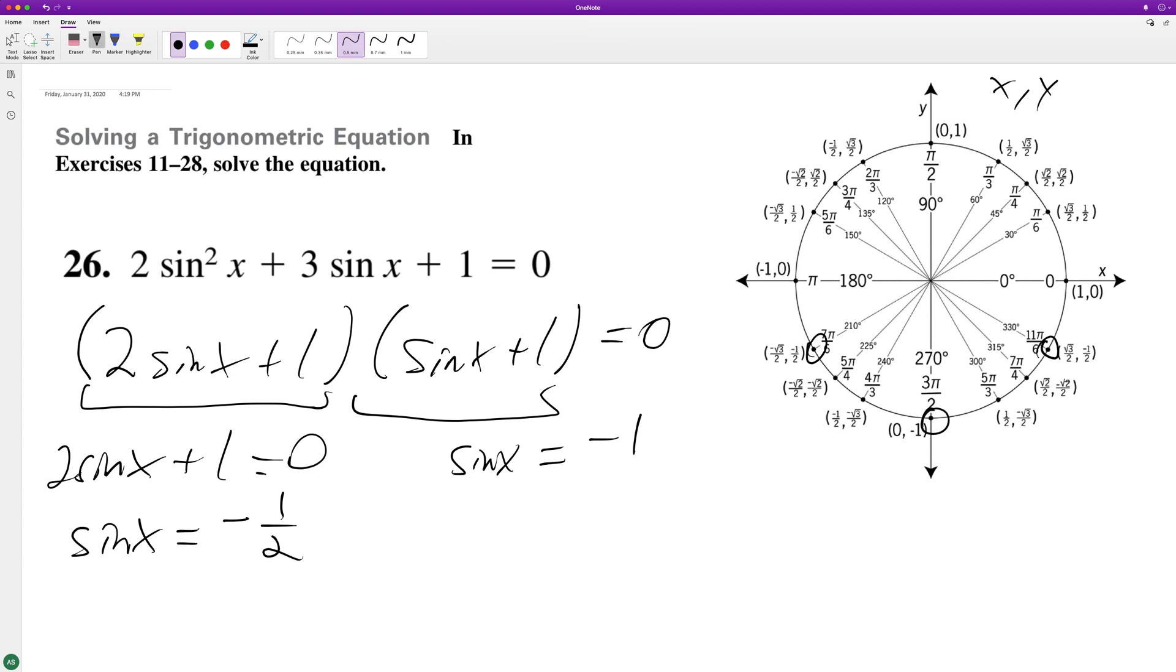So those are our solutions, but to get them equal to every instance coterminal angle, we're going to have 7 pi over 6 plus 2 pi n, 3 pi over 2 plus 2 pi n, and finally, 11 pi over 6 plus 2 pi n.